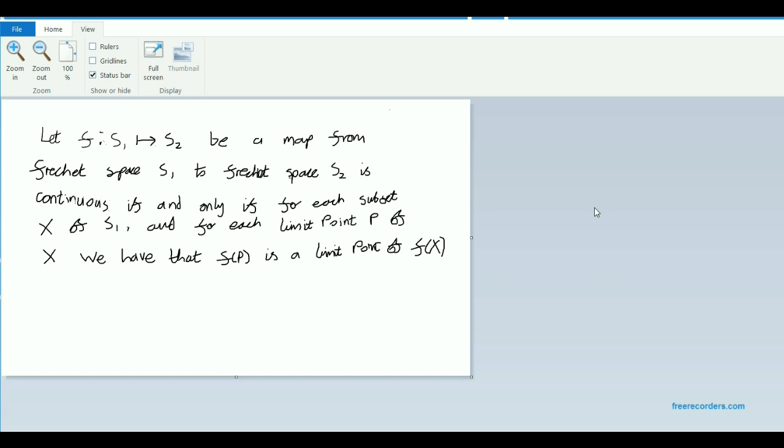will also be a limit point of the resulting set. So essentially we're mapping the limit point of subsets to the limit point of subsets and somehow this is a way which we can nail down the notion of a continuous mapping from one Fréchet space to another.